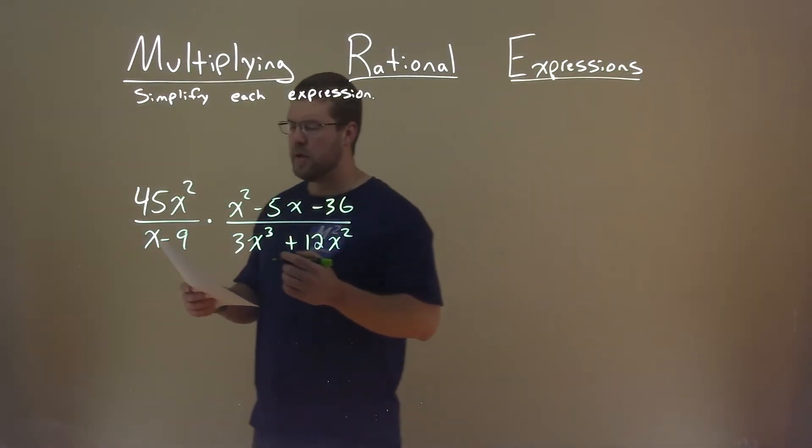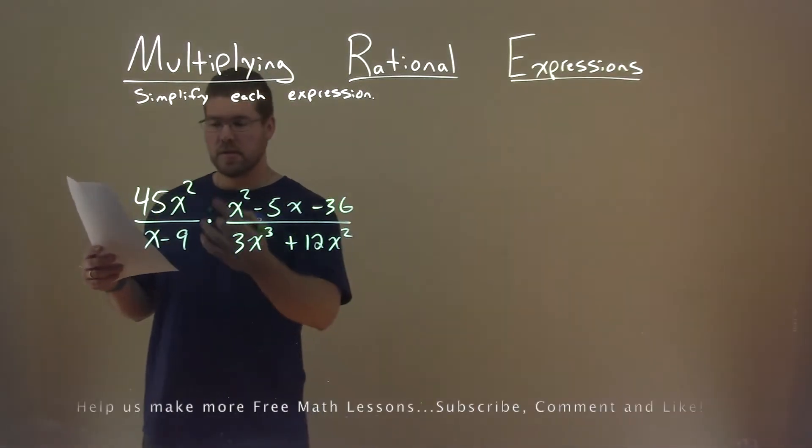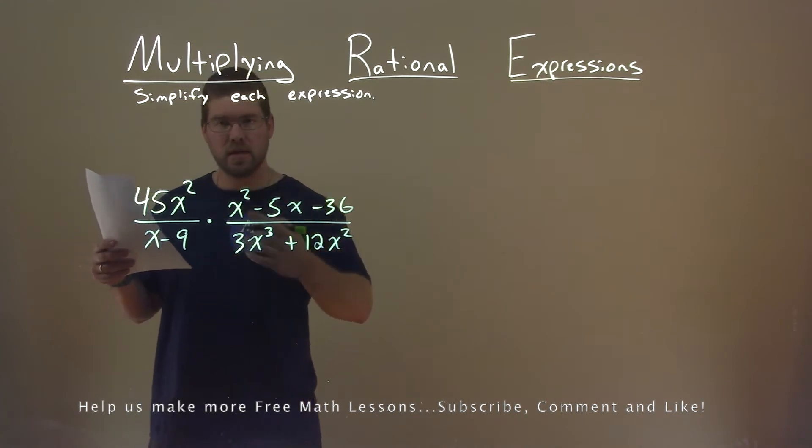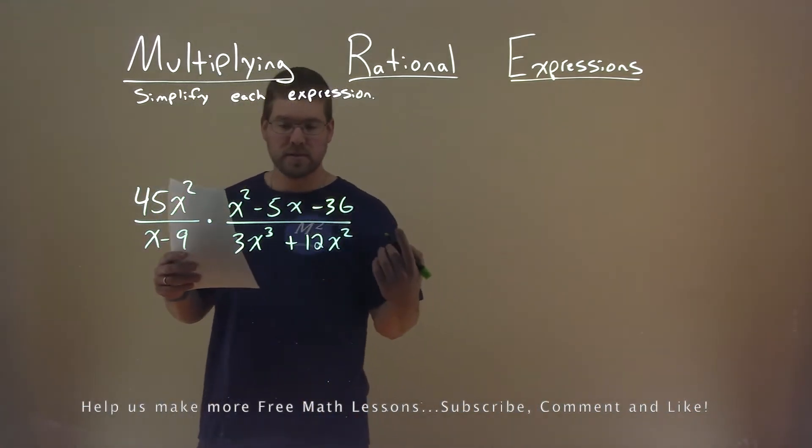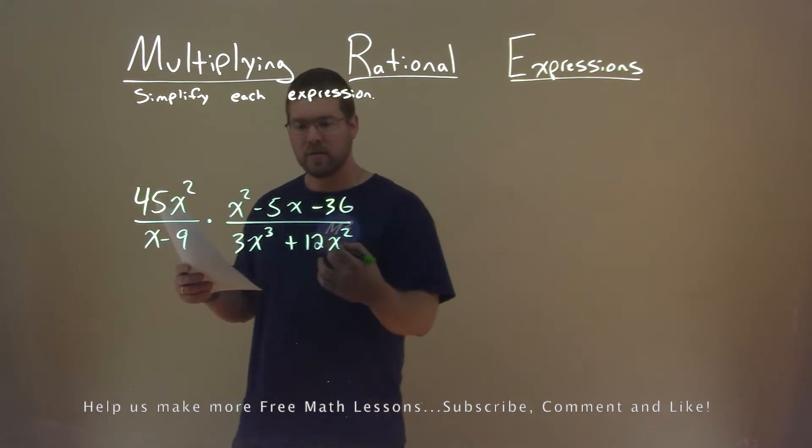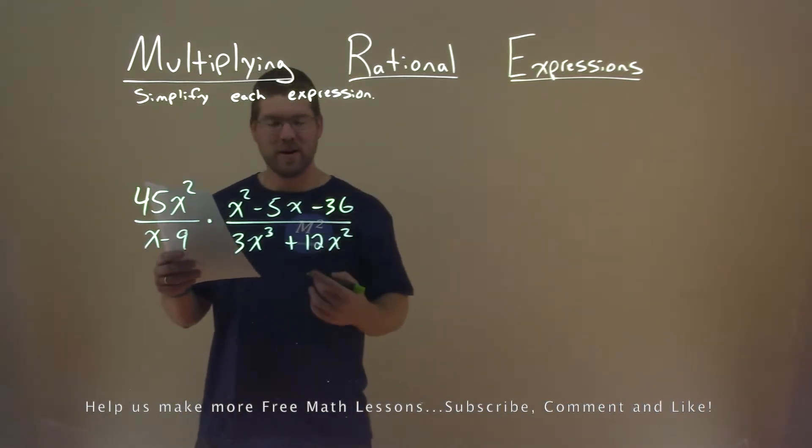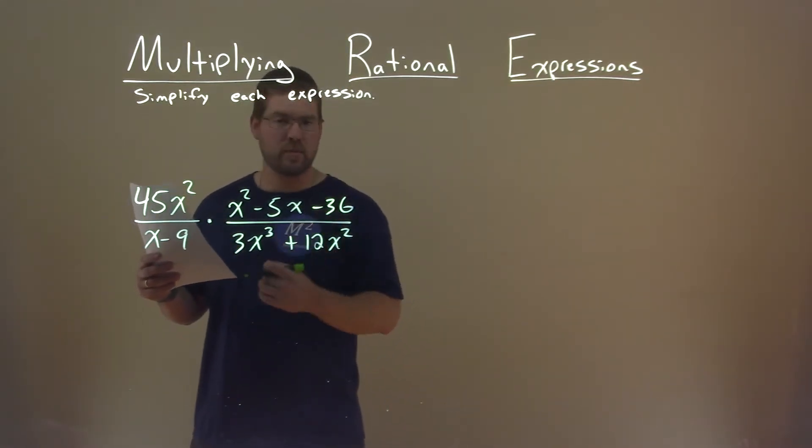We're given this problem right here: 45x squared divided by x minus 9 times x squared minus 5x minus 36 divided by 3x to the third plus 12x squared, and we need to simplify this expression.